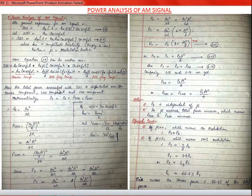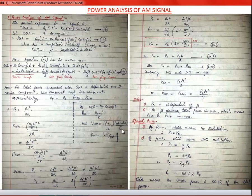The total power associated with S(t) is distributed over the carrier component, the upper sideband, and the lower sideband. Mathematically, total power = carrier power + upper sideband power + lower sideband power. In general, AC power = V_rms² / R, where V_rms = V_m / √2, so AC power = V_m² / (2R).